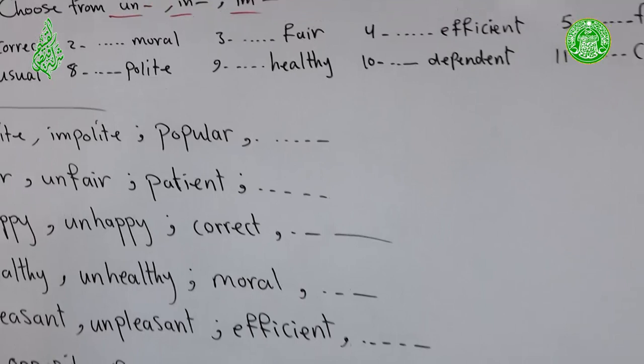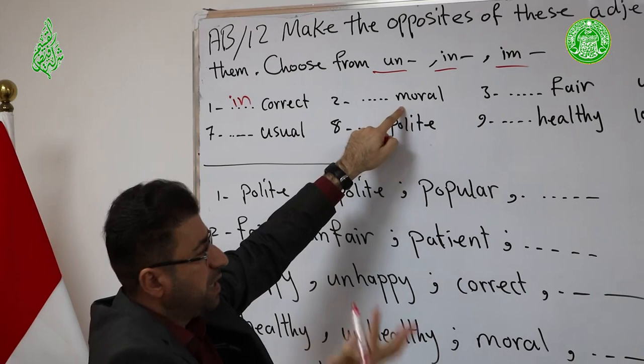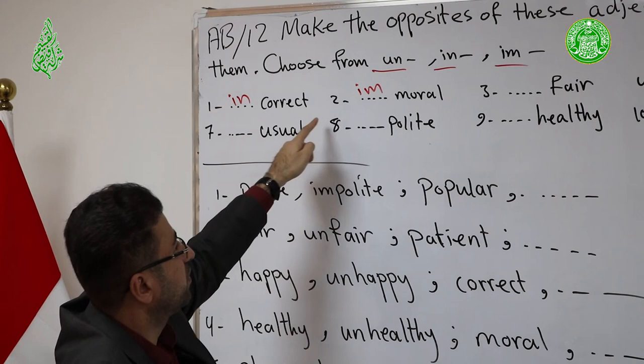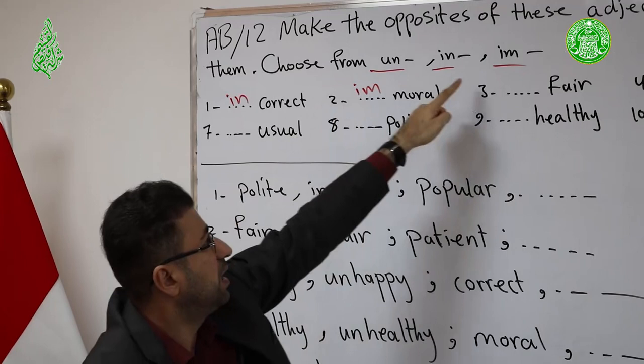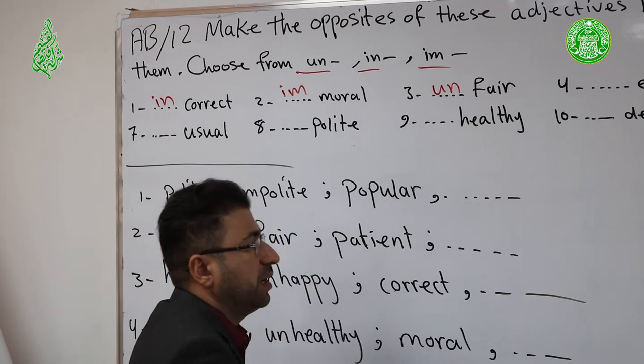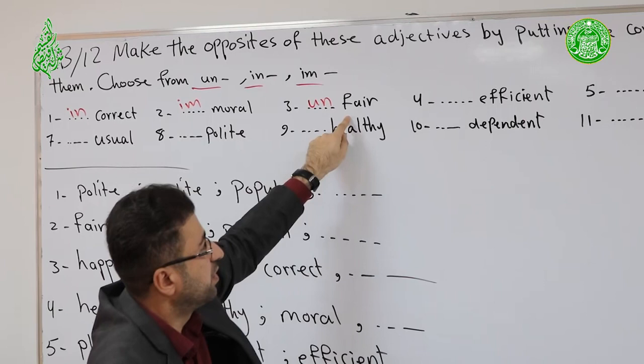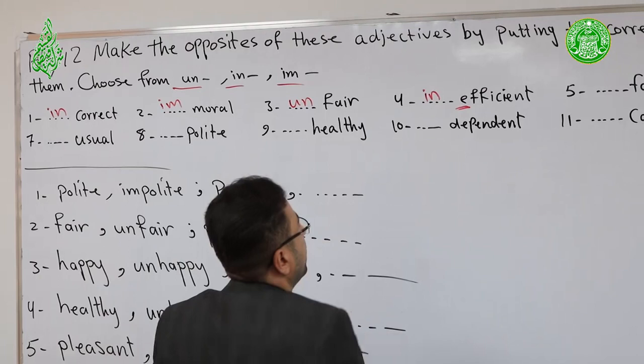Correct → Incorrect (starts with C, so add IN). Moral → Immoral (starts with M, so add IM). Fair → Unfair (starts with F — not in the previous notes, so add UN). Efficient → Inefficient (starts with E, so add IN).